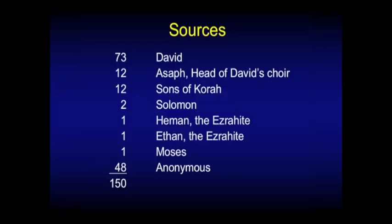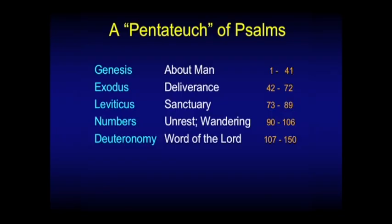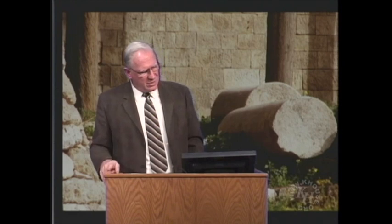The Psalms have many sources: 73 are specifically ascribed to David, and the oldest was probably written by Moses himself. Forty-eight are anonymous, for a total of 150. Many people catalog the Psalms into five books—sometimes called the Genesis, Exodus, Leviticus, Numbers, and Deuteronomy books—as being somehow parallel to those. I mention this because you'll find it in commentaries, but candidly, I don't see much in that. It impresses me as a little contrived.